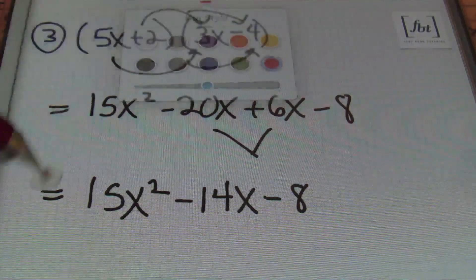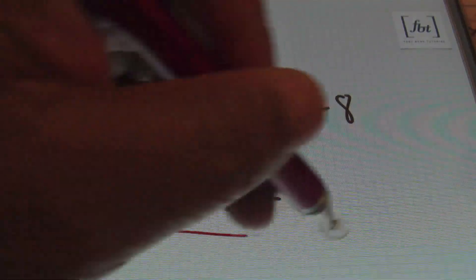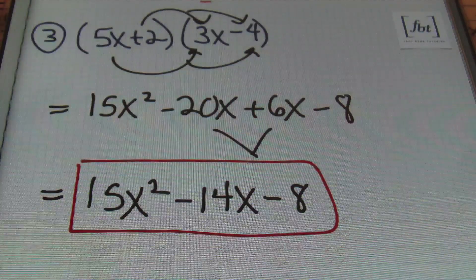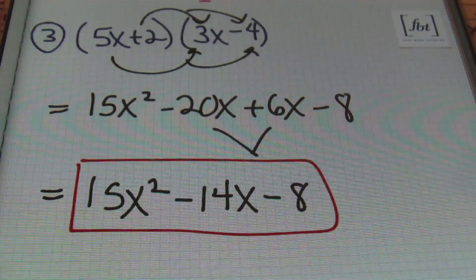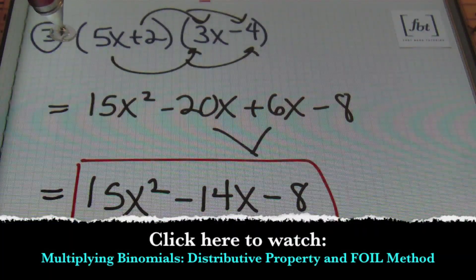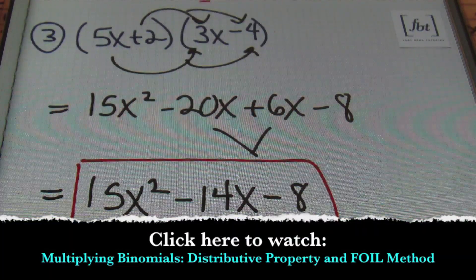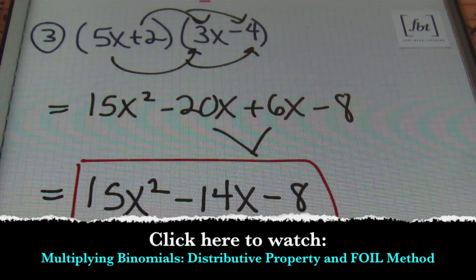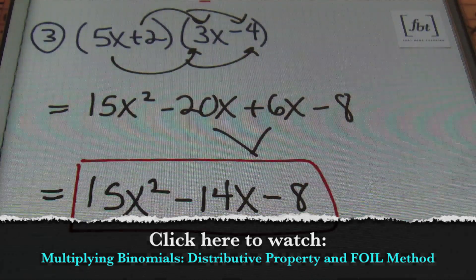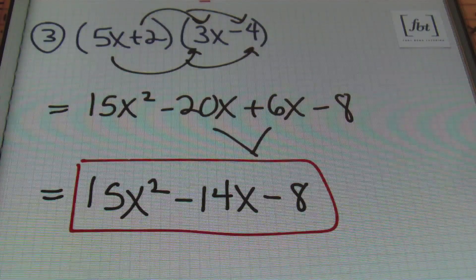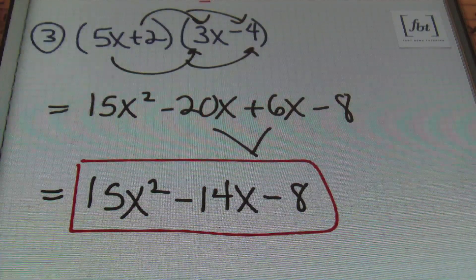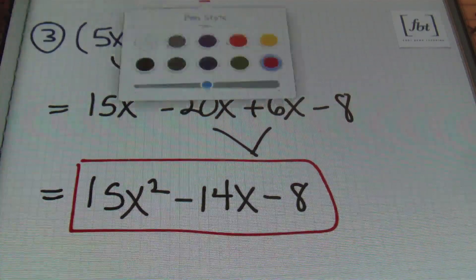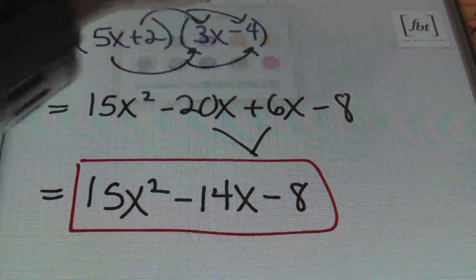Then I'll bring down this negative 8, and done. If you're looking for more problems like problem number 3, please check out our multiplying binomials video. We have 8 problems, in addition to the one you see here, to practice multiplying a binomial times a binomial. Alright, let's keep it moving.